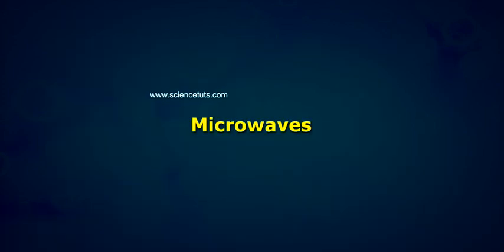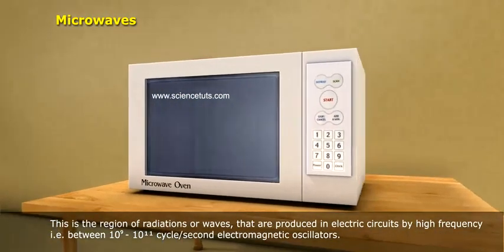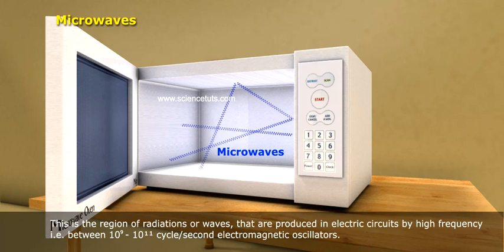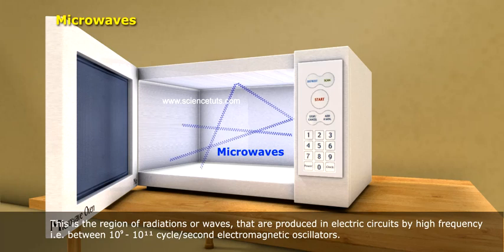Microwaves. This is the region of radiations or waves that are produced in electric circuits by high frequency, that is, between 10 to the power of 9 to 10 to the power of 11 cycles per second.